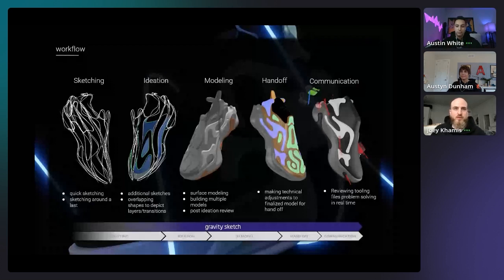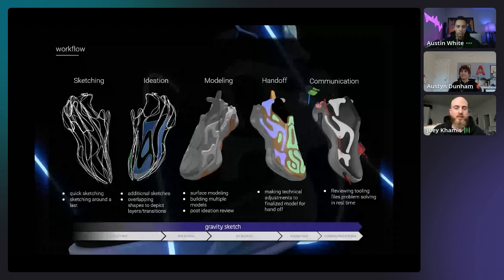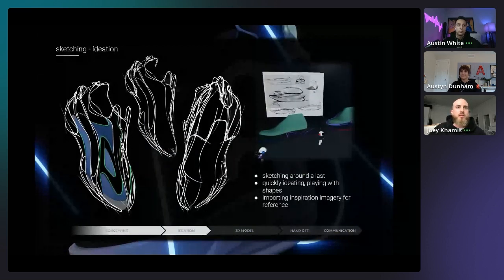One of the biggest unlocks as a designer from using Gravity Sketch has been in the early sketching and ideation phases. Normally we sketch on an iPad, pen and paper, or in a 2D program, but we're designing a 3D product. When I'm able to sketch and have lines form in a three-dimensional way, I immediately start visualizing how those lines will look from the top, side, and every view. You're not waiting on a physical sample to come back from 2D drawings and guessing what the top view will look like.